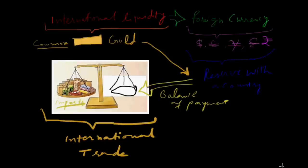Suppose if we talk about India and if India has a sufficient amount of dollars, pounds, euro, yen, this will be international liquidity. Now there is a common currency which can be exchanged from one country to another, that is called gold.